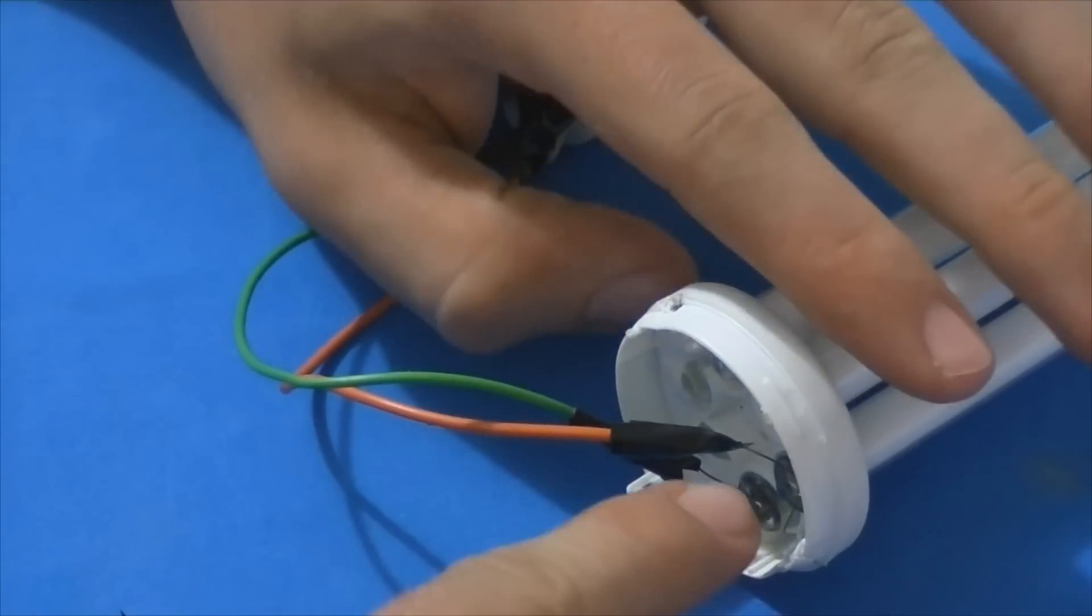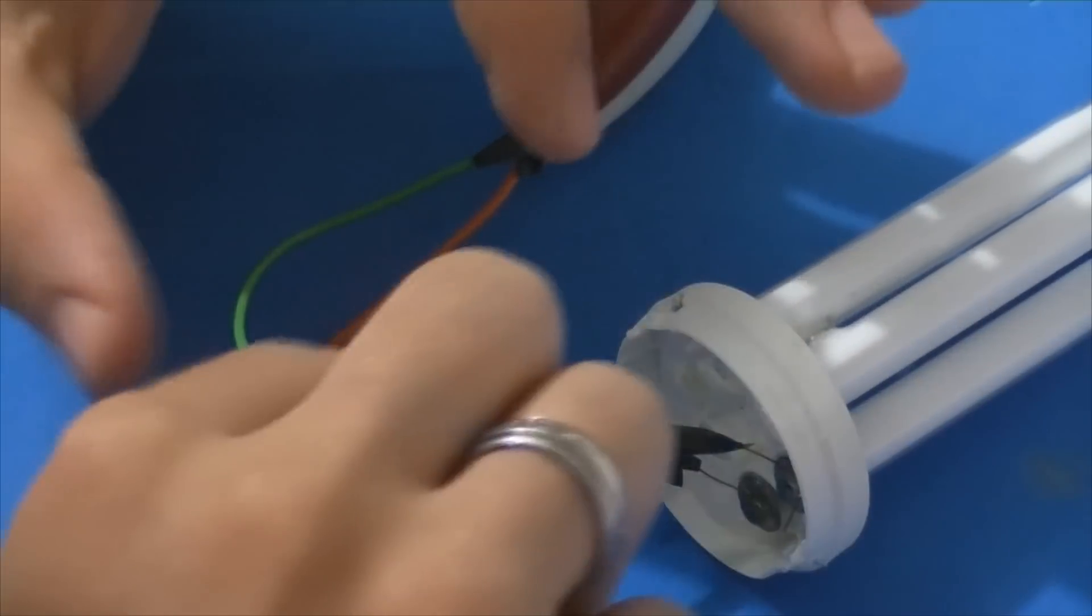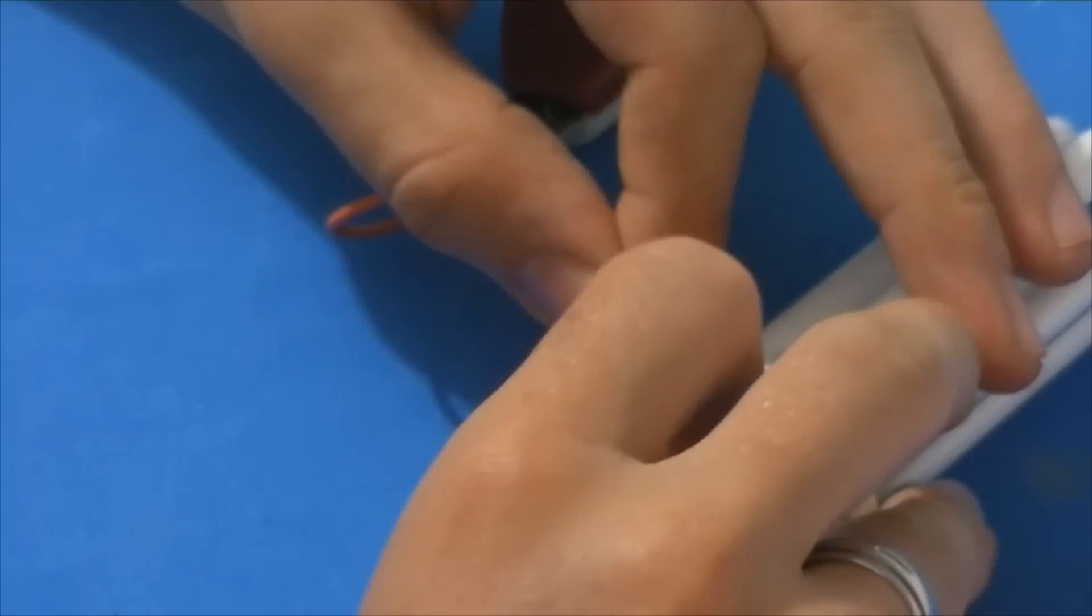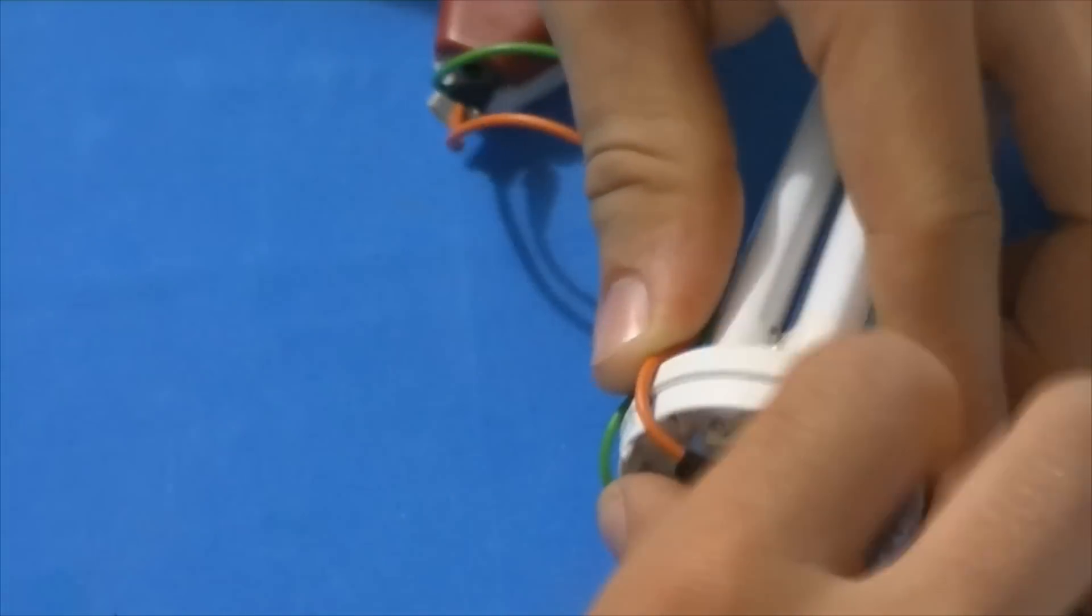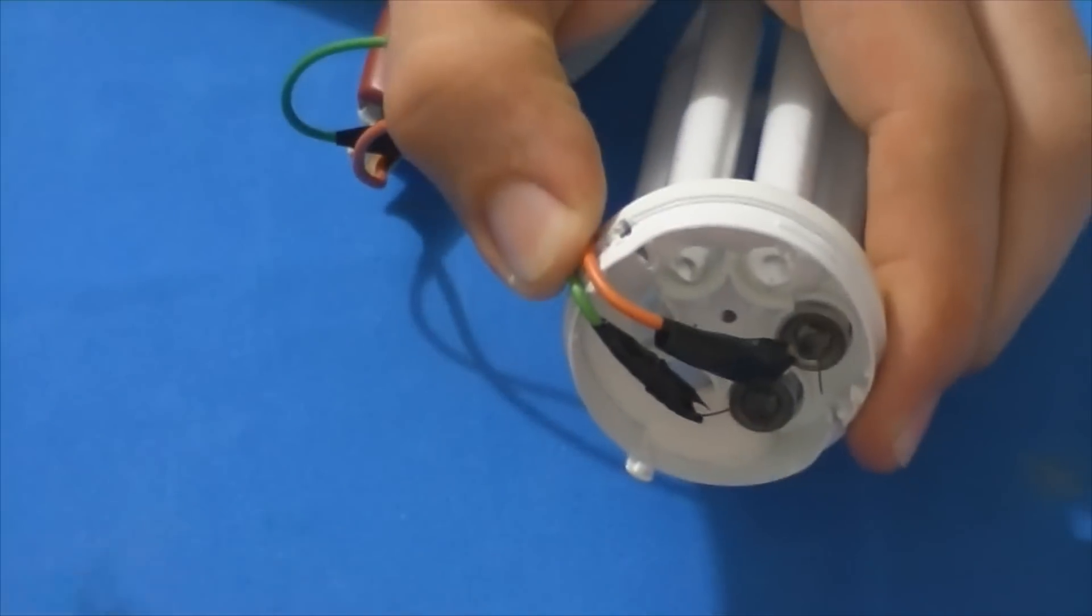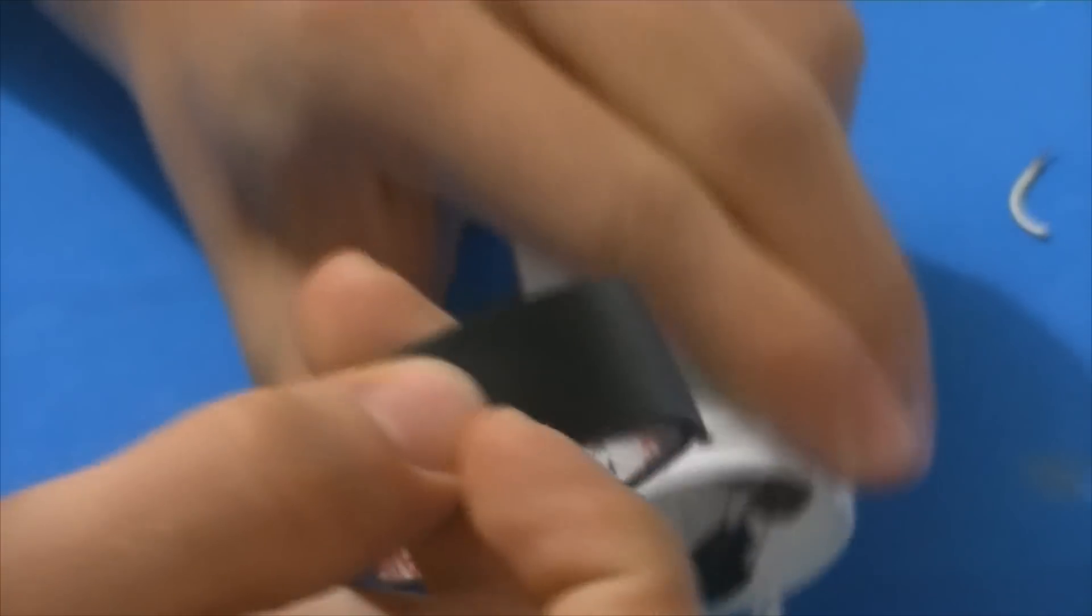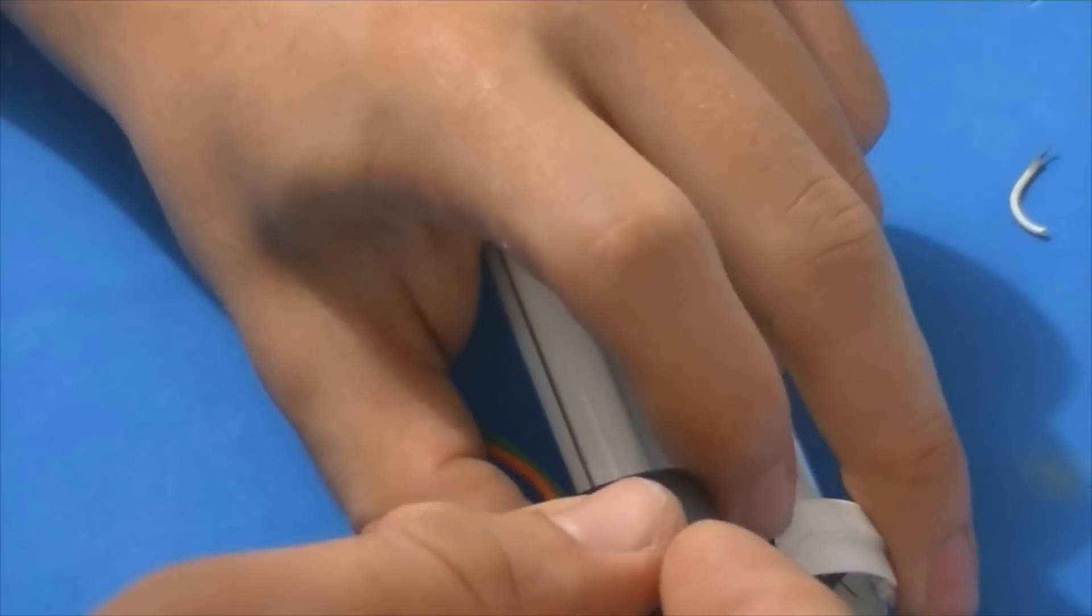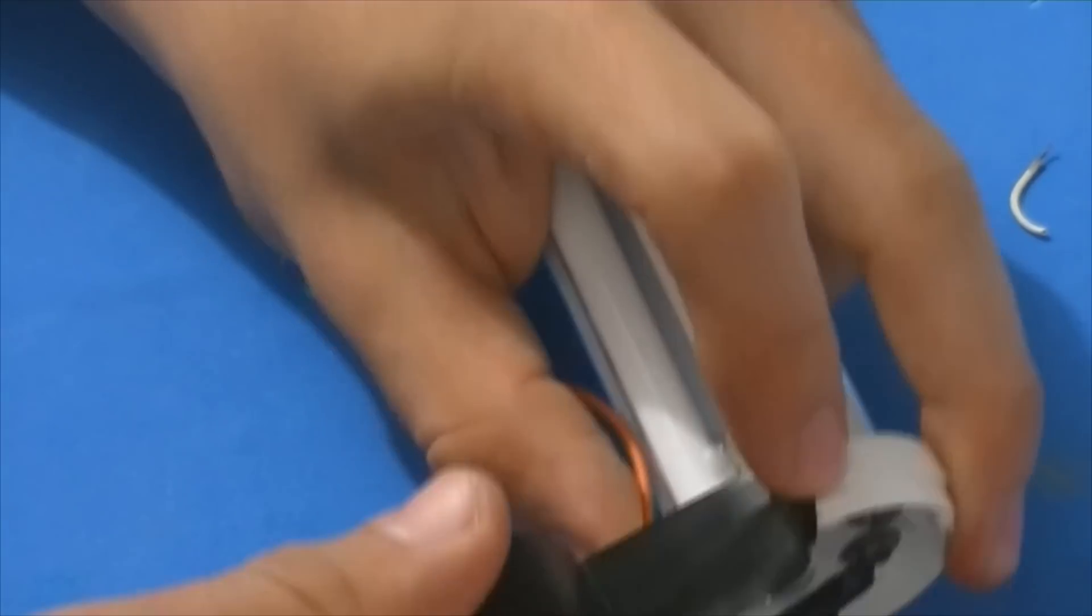Para que não aconteça do filamento arrebentar caso a gente puxe esse fio, vamos fazer o seguinte. Com muito cuidado, vamos passar o fio desse jeito aqui na lâmpada. Beleza? Sem forçar muito. E vamos passar fita isolante fixando o fio na lâmpada.